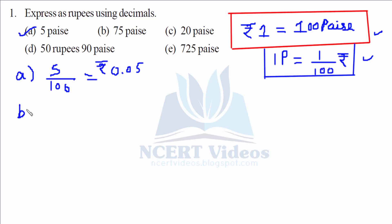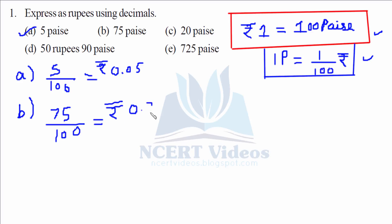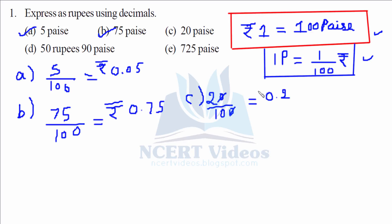Always remember to write units because it's important, otherwise it's incomplete. For part b, 75 over 100 gives you rupees 0.75. For part c, 20 over 100 — the zero gets cancelled out — gives you 0.2 rupees.